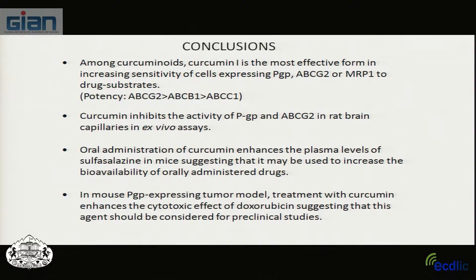The next step was to go to clinical trials, but unfortunately no institutions would pick up clinical trials with curcumin, because in the US it is considered a traditional medicine and is not patentable for commercial use. The NCI could not be convinced either. The conclusions of this study: among curcuminoids, curcumin I is the most effective, increasing sensitivity of cells expressing PGP, ABCG2, or MRP1. Potency order is ABCG2 > ABCB1 > MRP1. It inhibits activity at the blood-brain barrier, and oral administration enhances plasma levels of the ABCG2 substrate sulfasalazine.